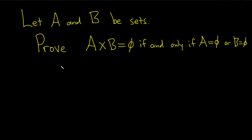Hi everyone. In this video we're going to prove this statement involving sets. So let's go ahead and go through it. This is an if and only if statement, so we have to prove if this is true then this is true, and if this is true then this is true — we have to prove both directions. I'm going to indicate the direction we're proving by using an arrow. So let's start by proving this direction here.